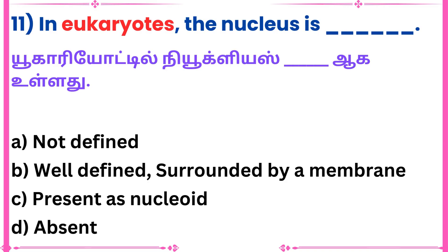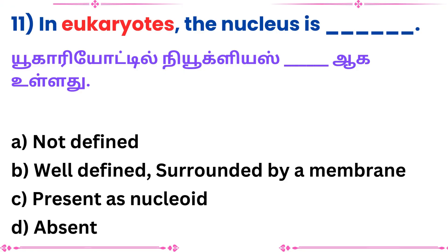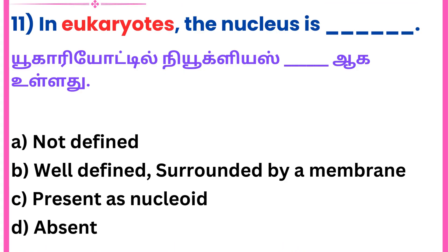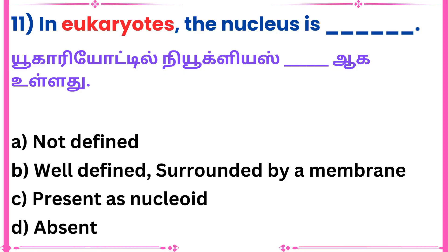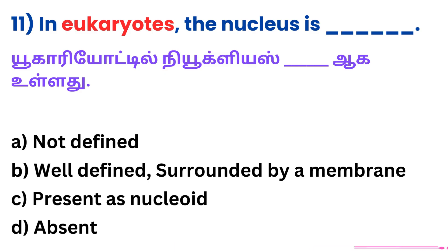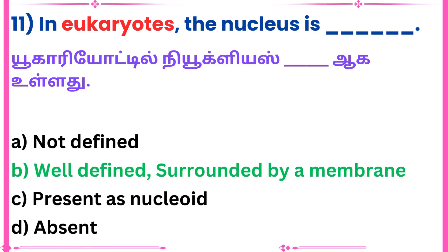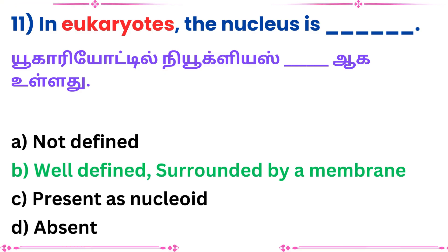Eleventh question: In eukaryotes, the nucleus is dash. Answer: Well defined and surrounded by a membrane.